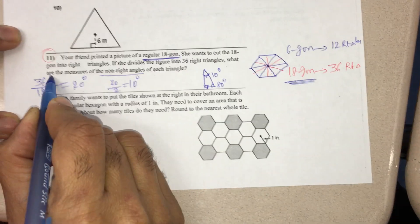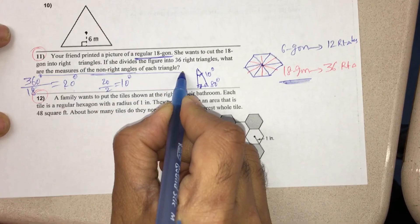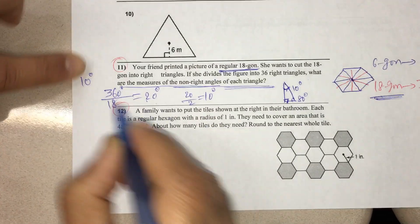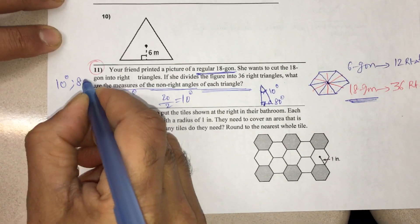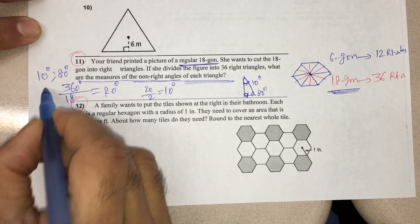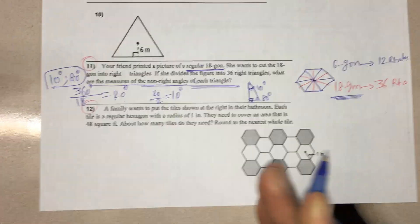And so, what are the measures of non-right angles of each triangle? That means first one is 10 degrees, second one is 80 degrees, and third one is right angle. Totally, you will get 180 degrees. So this is the answer for this question. Thank you.